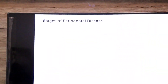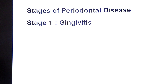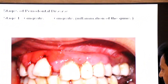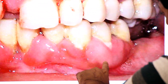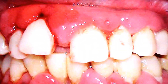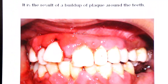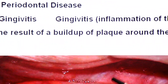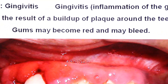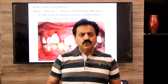The first stage of periodontal disease is gingivitis — inflammation of the gums. In this photograph you can see inflammation of the gums; the gums become red and swollen. It is the result of a buildup of plaque, a bacterial biofilm, around the teeth. The gums may become red and may bleed.